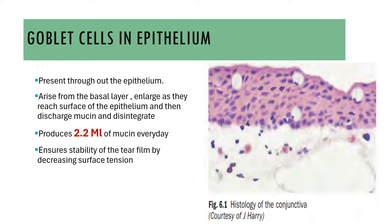Goblet cells play a very important role in the conjunctiva. They are present throughout the epithelium, arise in the basal layers, and become larger toward the surface where they disintegrate and release mucin. The amount of mucin produced every day is about 2.2 mL, and goblet cells ensure stability of the tear film by decreasing its surface tension.